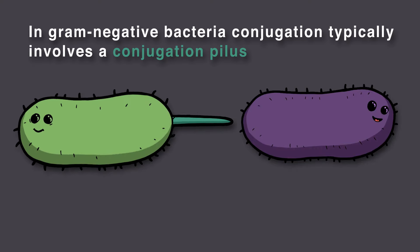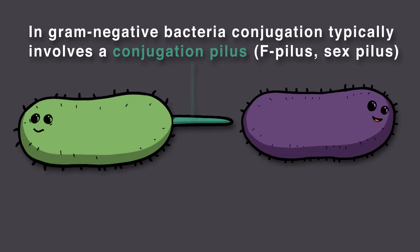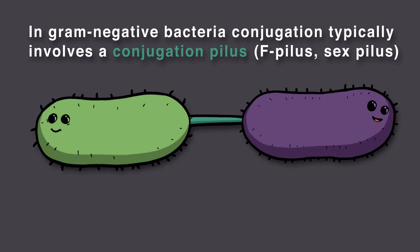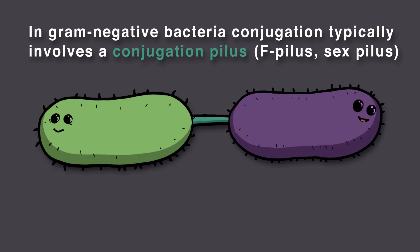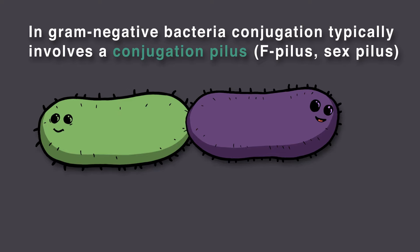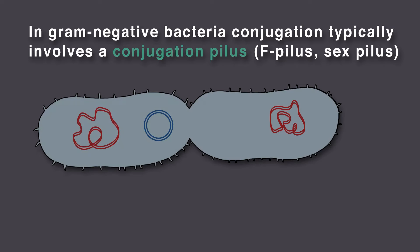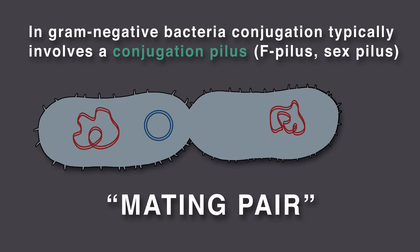However, in gram-negative bacteria, this typically involves a conjugation pilus, also known as an F-pilus or a sex-pilus. The conjugation pilus binds the other bacterium, then retracts to pull the two cells together. Once a bridge is formed with an opening between the two bacteria, they are now called a mating pair.